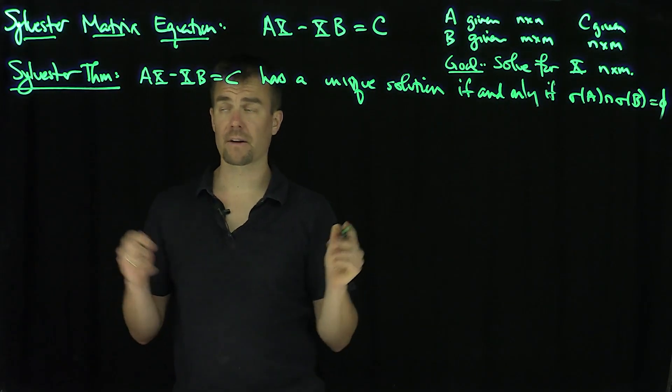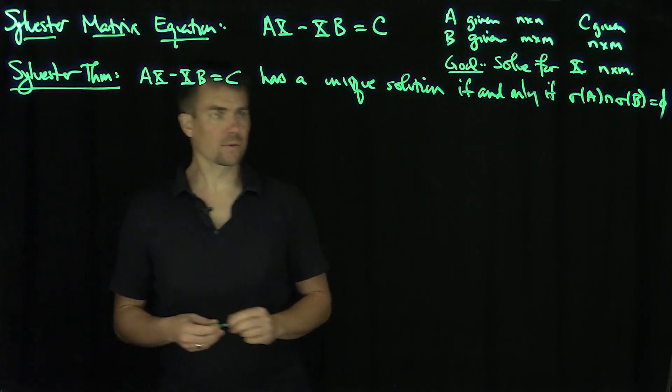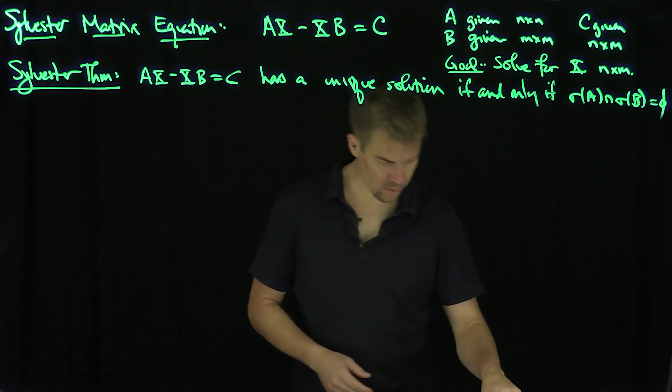In other words, A and B share no eigenvalues. Excellent. Let's prove this, and so we start by a lemma.